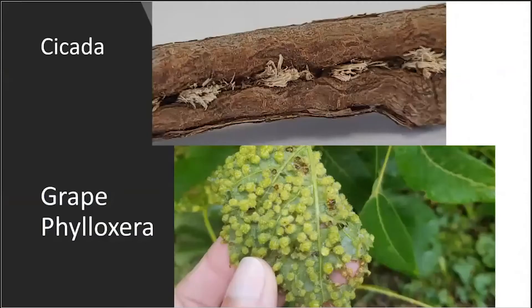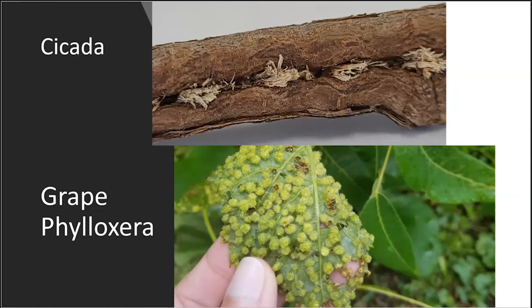Something else we see is cicada damage. The example at the top is a twig — the damage is not from feeding, it is from their laying eggs in the twigs. When we get periodical cicadas in large populations, we can see lots of twig damage. The bottom example is a common one called grape phylloxera, where the insects cause these galls. Some varieties of grapes are more able to withstand this than others, but they can cause a tremendous amount of damage from the injury that creates those galls.